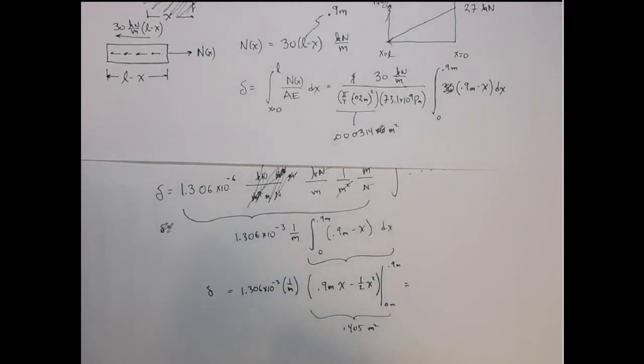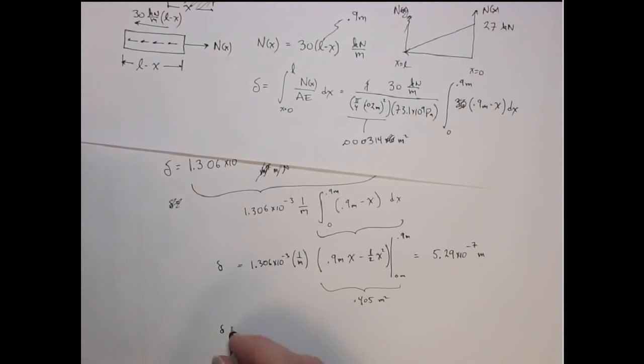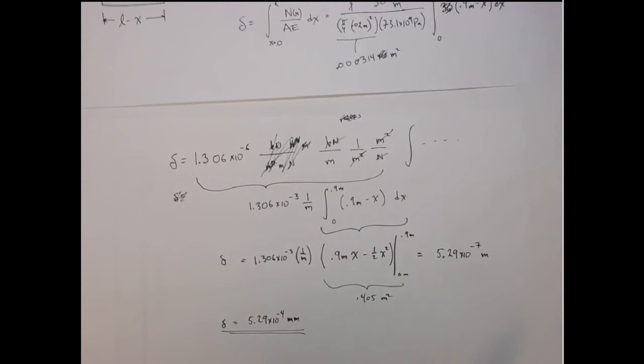Multiplying by that, I now get 5.29 times 10 to the minus 7 meters, or delta equals 5.29 times 10 to the minus 4 millimeters. You might want to double check the integration. Actually, I'll probably do another video where I show you how we can solve this integral in Mathematica.